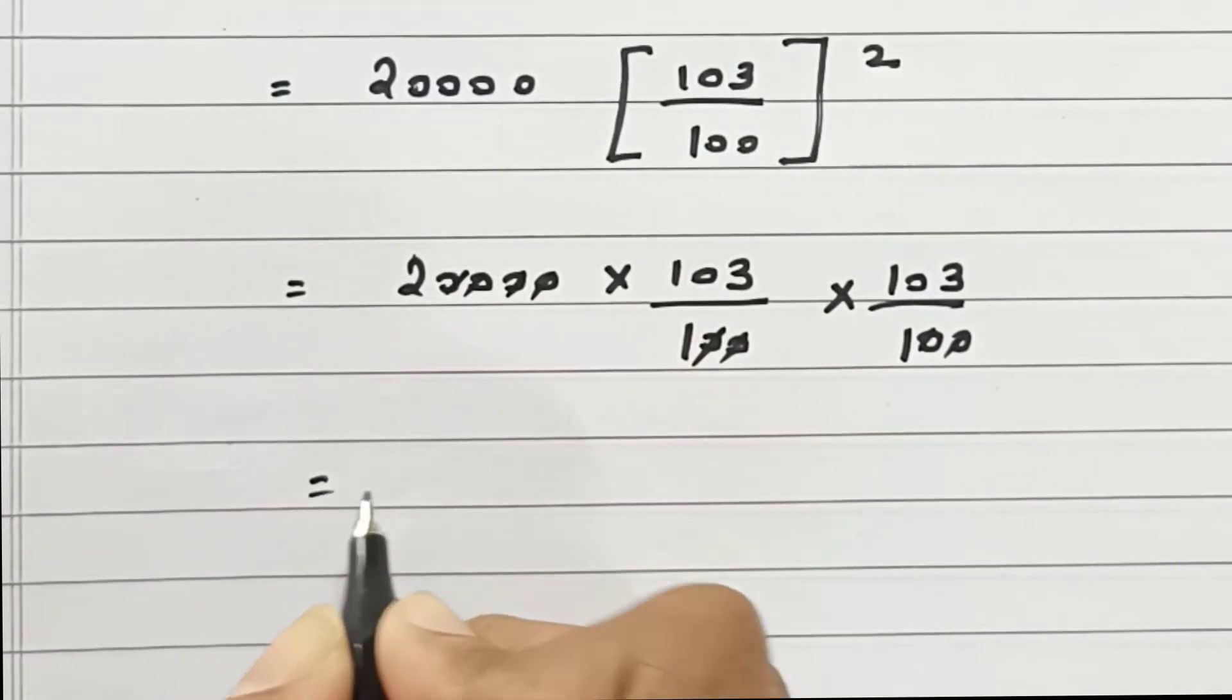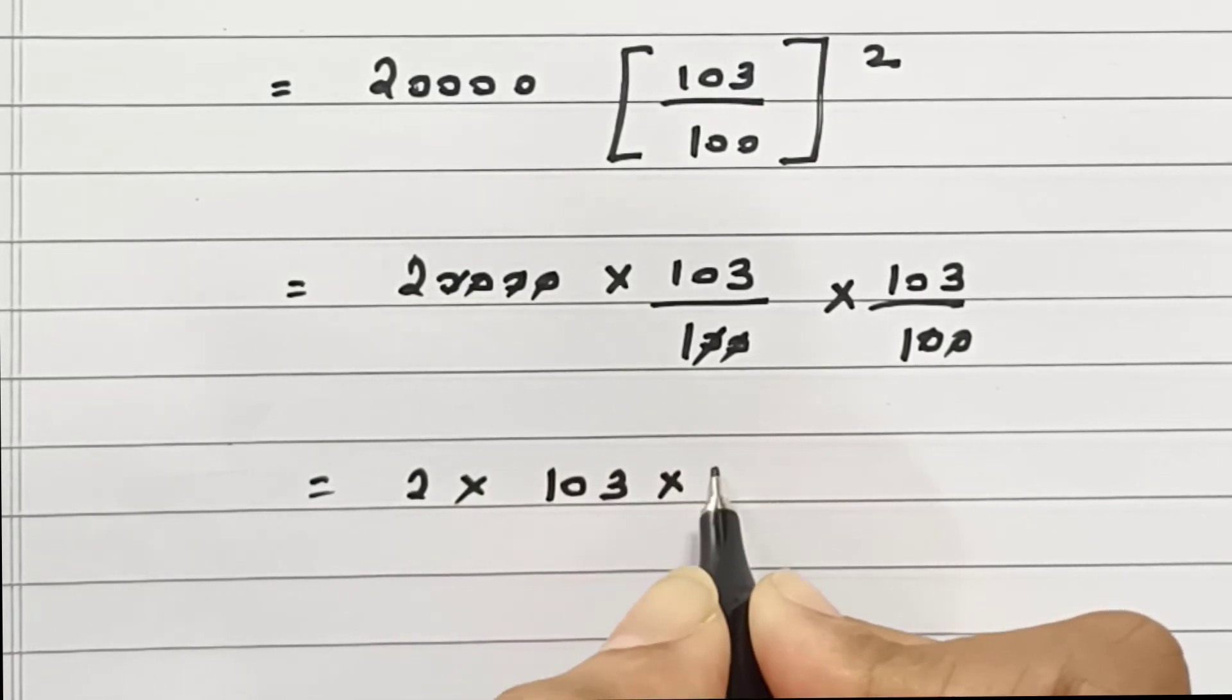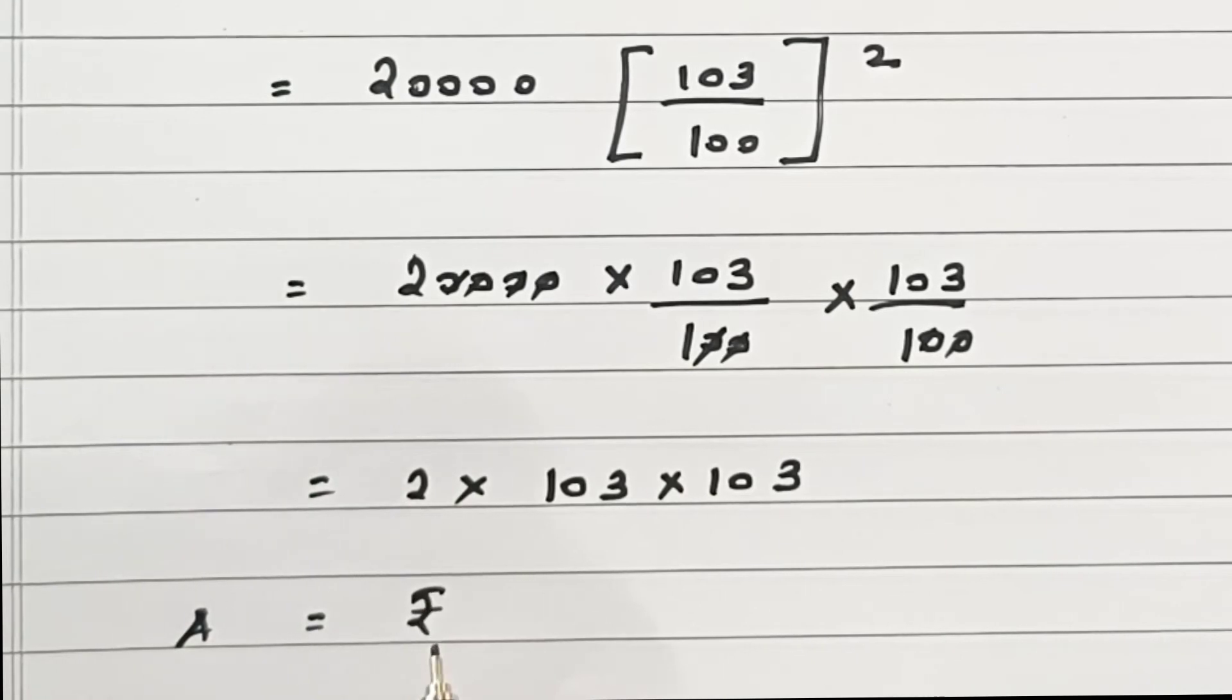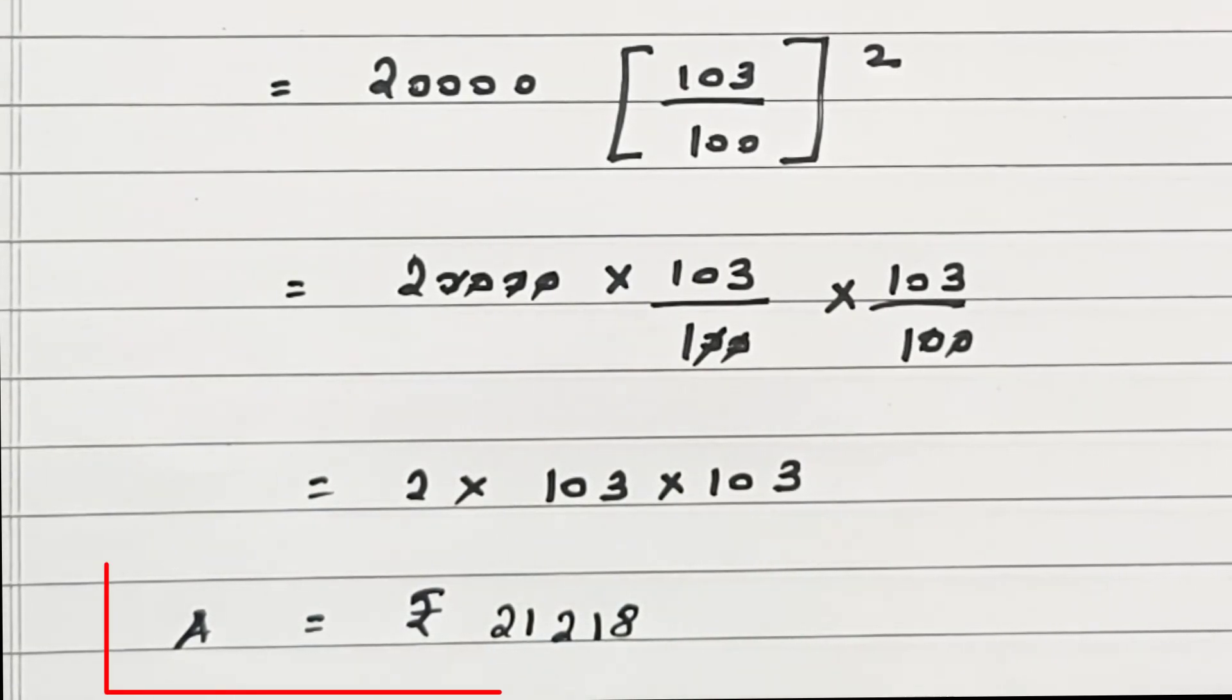So we have 2 into 103 into 103. So upon multiplication we get ₹21,218. So amount is equal to ₹21,218.